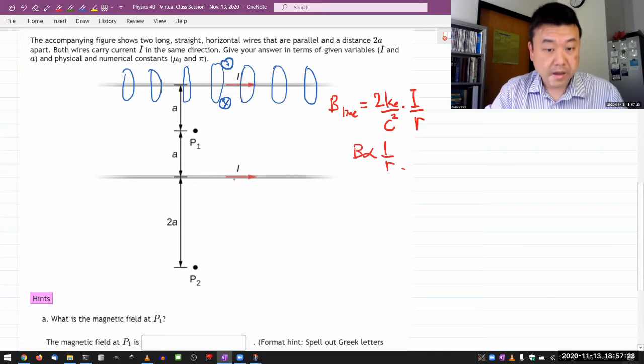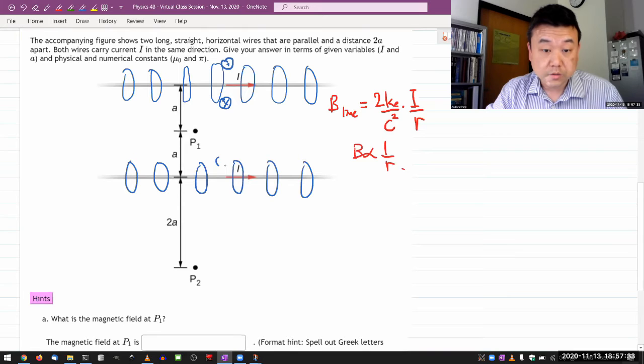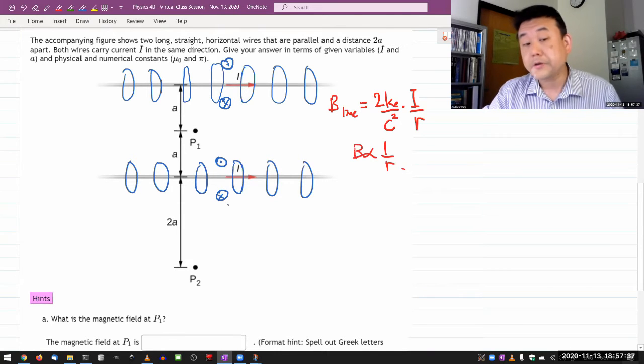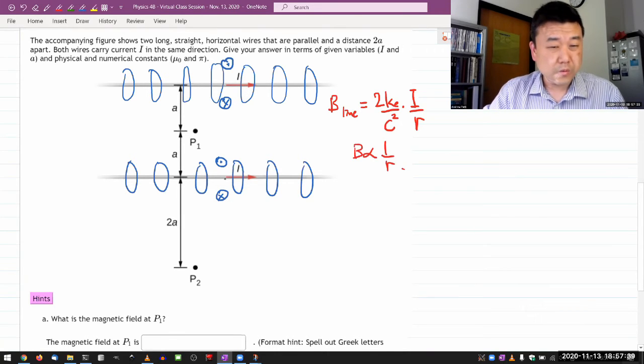So that's for the top. And for the bottom, it's actually exactly the same, they are identical lines. So it'll have circular magnetic fields, and at the top, it should be coming out of the page. At the bottom, it should be going into the page.